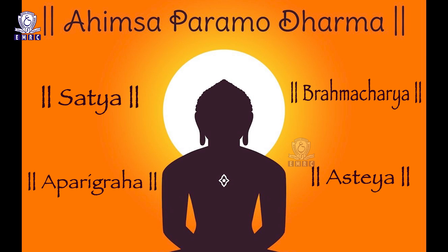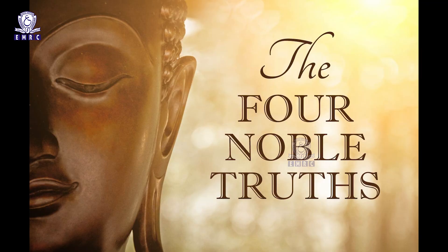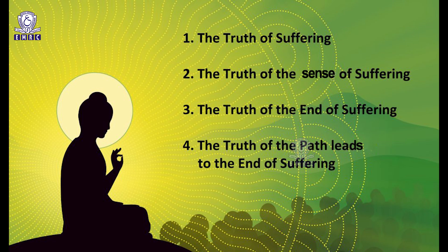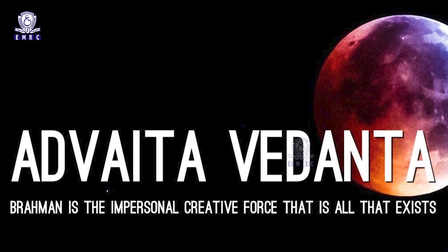Mahavira traveled the country barefoot teaching ahimsa, satya, brahmacharya, aparigraha, and asteya. Buddha set forth four noble truths: the truth of suffering, the truth of the cause of suffering, the truth of the end of suffering, and the truth of the path that leads to the end of suffering. Adi Shankara, founder of Advaita Vedanta, was an excellent communicator. The mutts established by him were sources of information and propaganda. In the propaganda model, the purpose is to promote a point of view, ideology, or religion among the public.